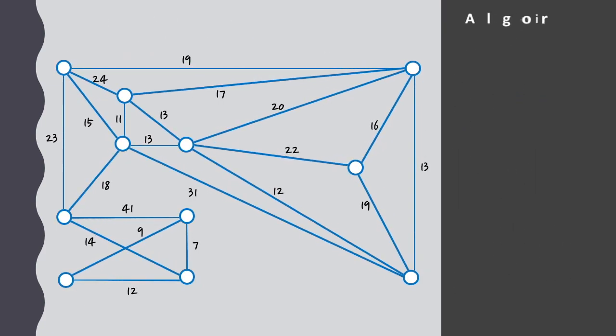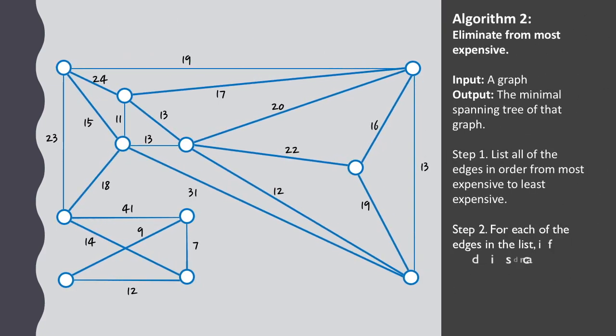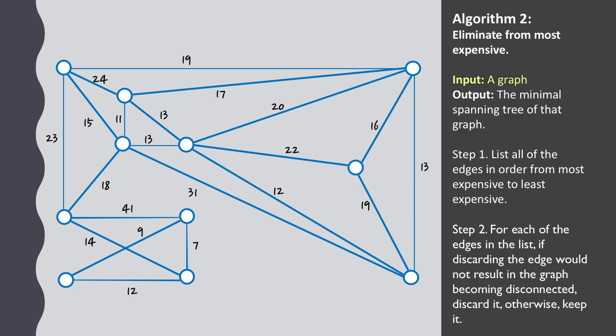We'll now implement an alternative algorithm on the same graph. In this case, we proceed from most expensive to least expensive, and discard unless it causes any of the vertices to become disconnected.